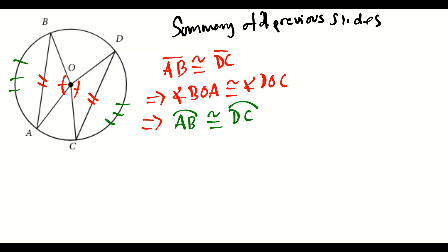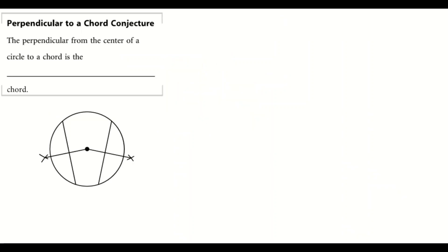That's huge — if two chords are congruent, their central angles are congruent, and their intercepted arcs are also congruent. Moving on: the Perpendicular to a Chord Conjecture states that the perpendicular from the center of a circle to a chord is the bisector of that chord.